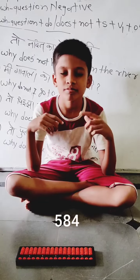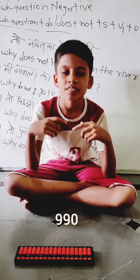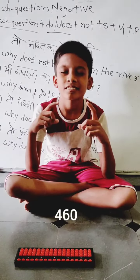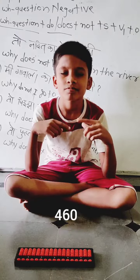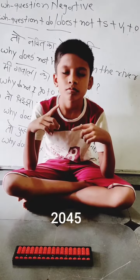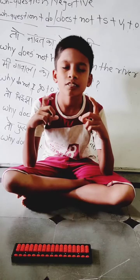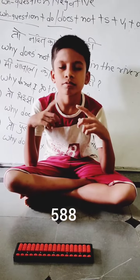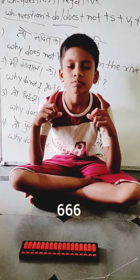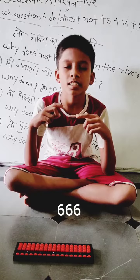146 x 4 = 584. 330 x 3 = 990. 230 x 2 = 460. 409 x 5 = 2045. 147 x 4 = 588. 222 x 3 = 666.